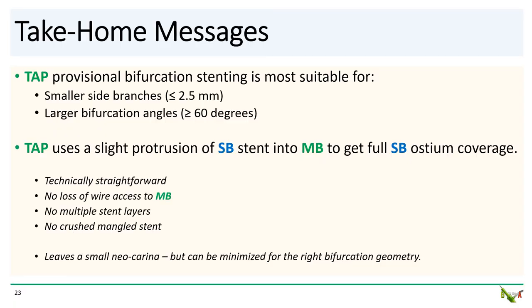Take-home messages: The TAP provisional bifurcation stenting technique is usually most suitable for smaller side branches and larger bifurcation angles, though I've gotten very good results even for larger vessels and smaller angles. TAP uses a slight protrusion of the side branch stent into the main branch to achieve full side branch stent ostium coverage at the bifurcation. TAP is my personal favorite bifurcation stenting technique because it is quick and easy, you keep wire access through the main branch throughout the procedure, and you don't leave behind multiple stent layers or crushed stents. You do leave behind a small neocarina, but that can be minimized for the right bifurcation geometry.